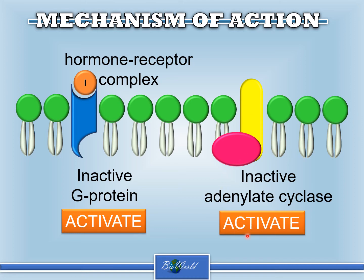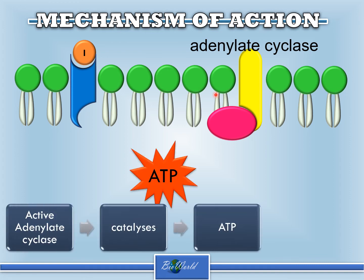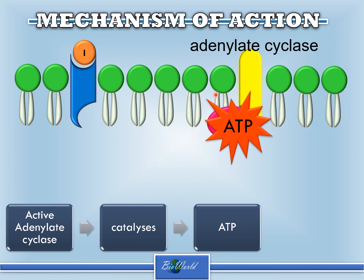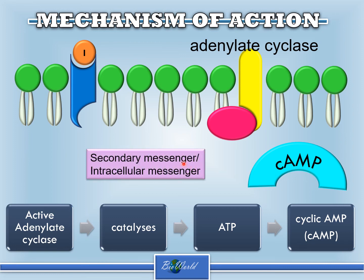The activated adenylate cyclase will start to carry out an enzymatic reaction — it will catalyze the conversion of ATP into a molecule called cyclic AMP, or cAMP for short. This cyclic AMP is going to be in the cytoplasm of the cell. So the cyclic AMP is known as the secondary messenger or the intracellular messenger, because cyclic AMP is going to carry out the instructions that were brought by insulin.